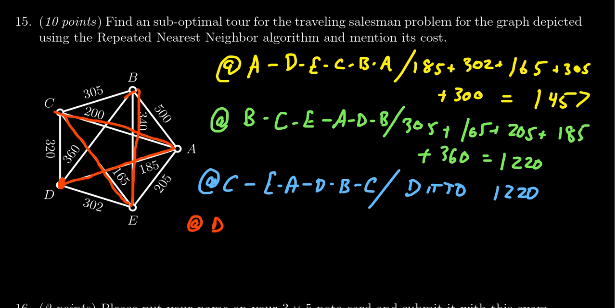From B, we go back to D, which costs 360. That gives us a new path. We went from D to A to C to E to B to D. That one costs 185 + 200 + 165